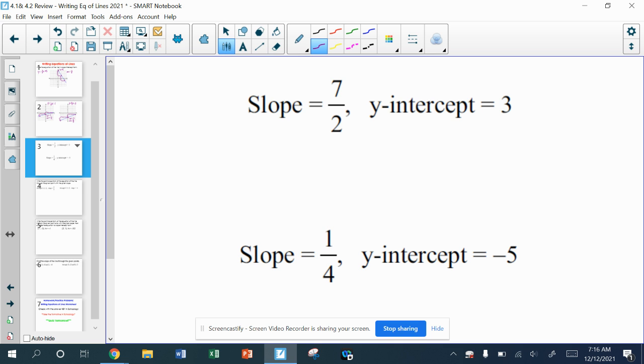On the worksheet today, you're going to have some problems that are literally this easy. If I tell you the slope and I tell you the y-intercept, can you write the equation for me? And for this, again, this is the m. The y-intercept is the b. So y equals 7 over 2x plus 3. Again, the only place that I could possibly see people making mistakes on this is forgetting the x.